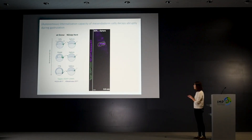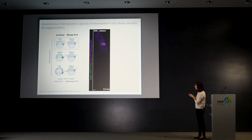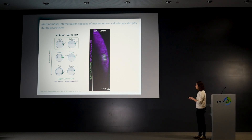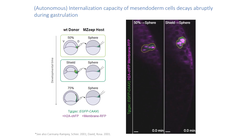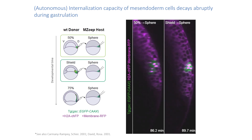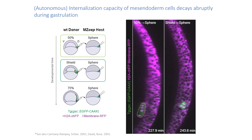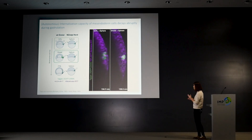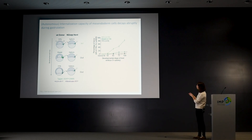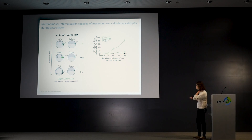Early cells collected from 50 percent epiboly were initially on the surface but by the end of the movie had translocated to the inside of the embryo. At later stages, however, to our surprise, cells did not internalize at all — they stayed in the same position until the end of the movie. When we compared the behavior, early cells had internalized in most cases by the end of gastrulation, but this was really not the case for later cells.